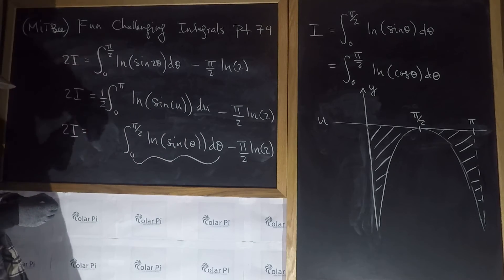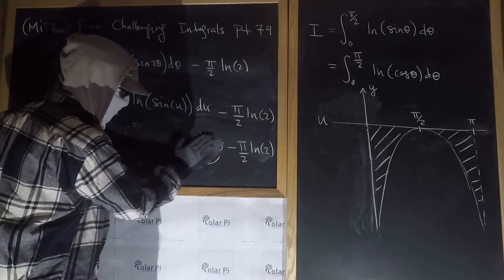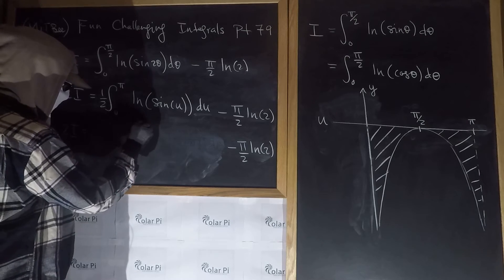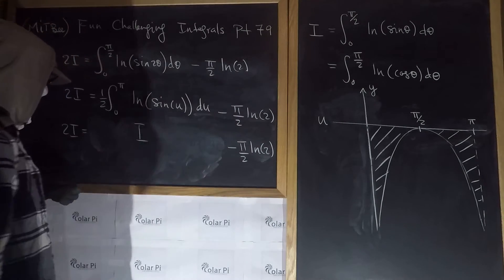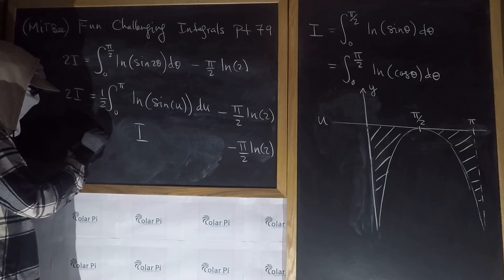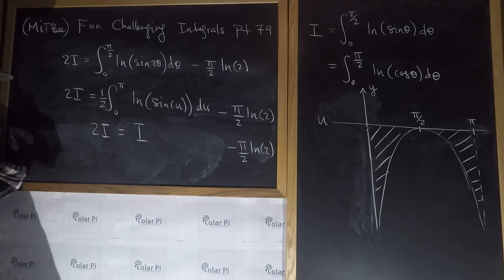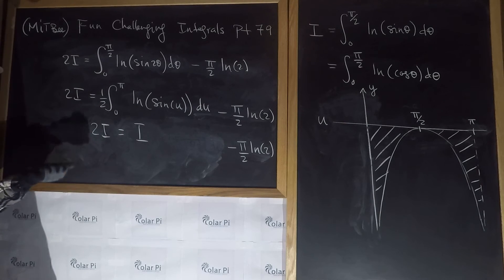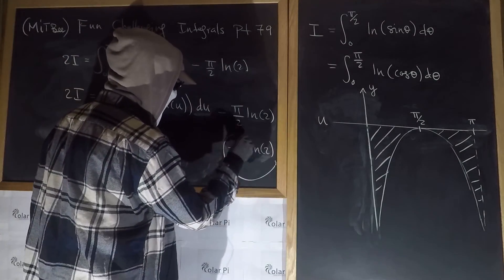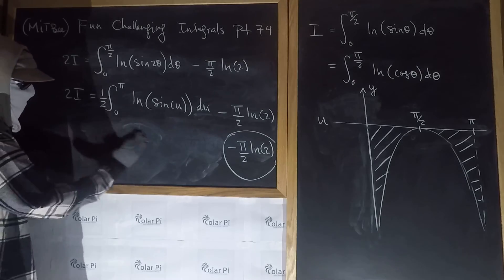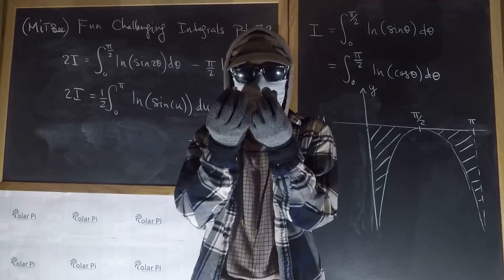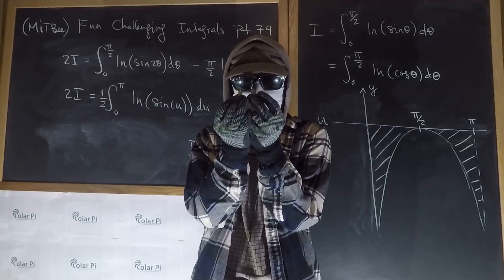Subtracting I from both sides, we get I equals −(π/2) · ln(2). And that's our answer! I hope you enjoyed this.